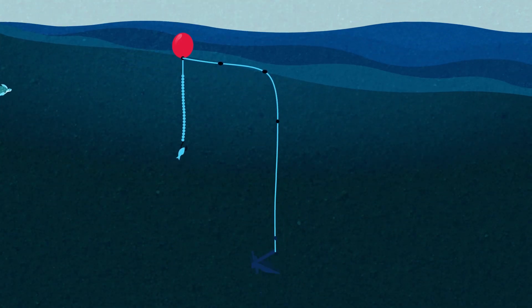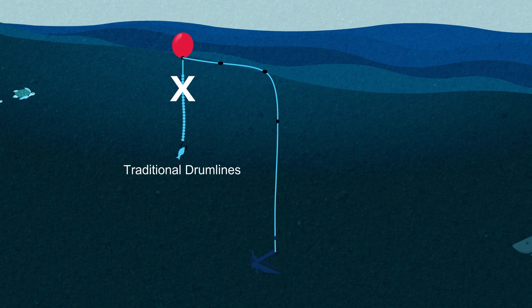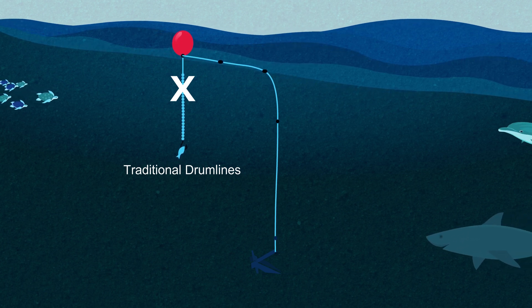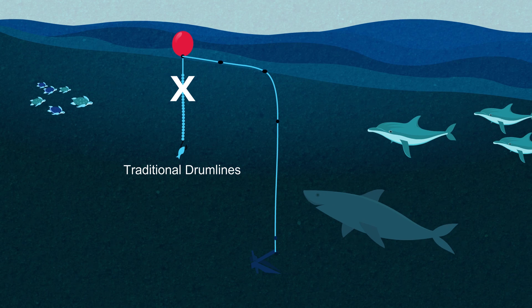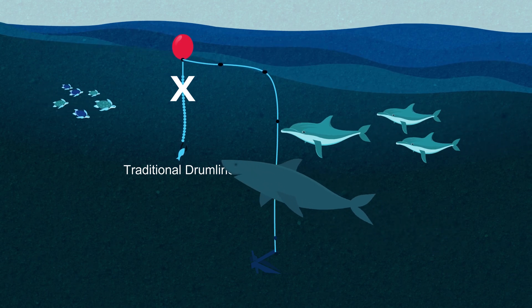Smart drumlines are vastly different to traditional drumlines. They are designed to alert operators when an animal is caught, allowing rapid response, including releasing marine species alive.